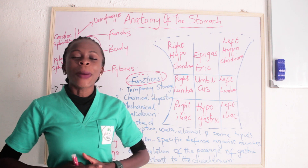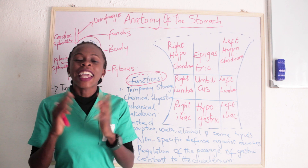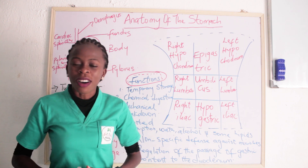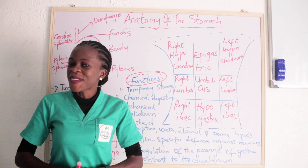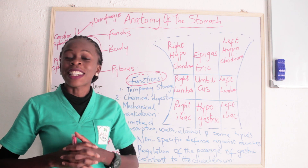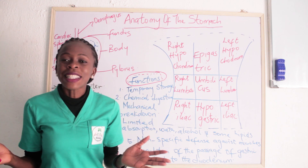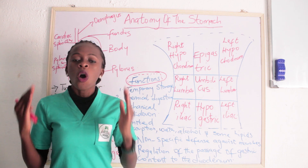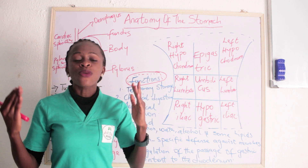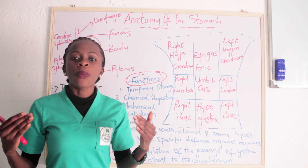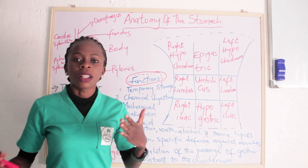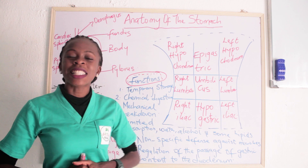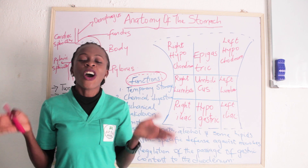Today we are going to be talking about the summary of the anatomy and physiology of the stomach. What have you heard about the stomach? What are the parts of the stomach? What are the speech tests? What are the functions of the stomach, and also what are the nine regions of the abdominal cavity? By the end of this class, you will be able to answer all those questions correctly.